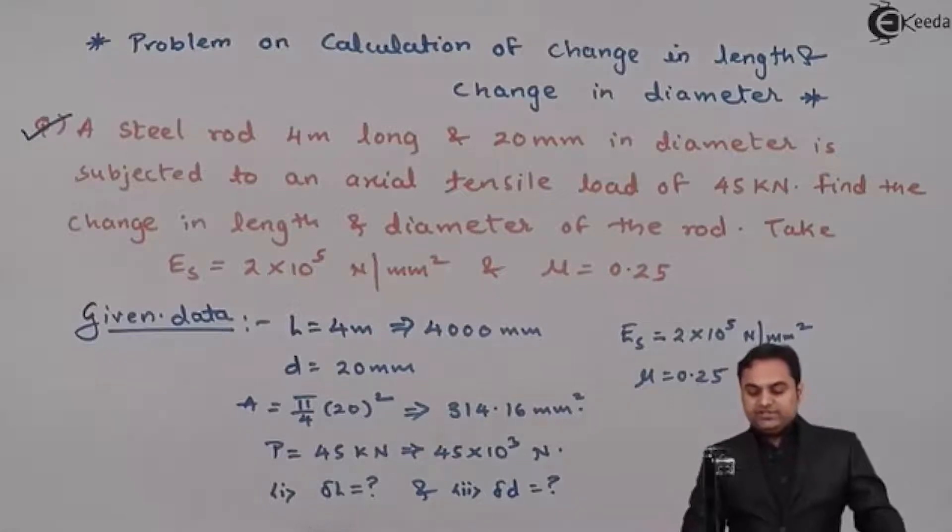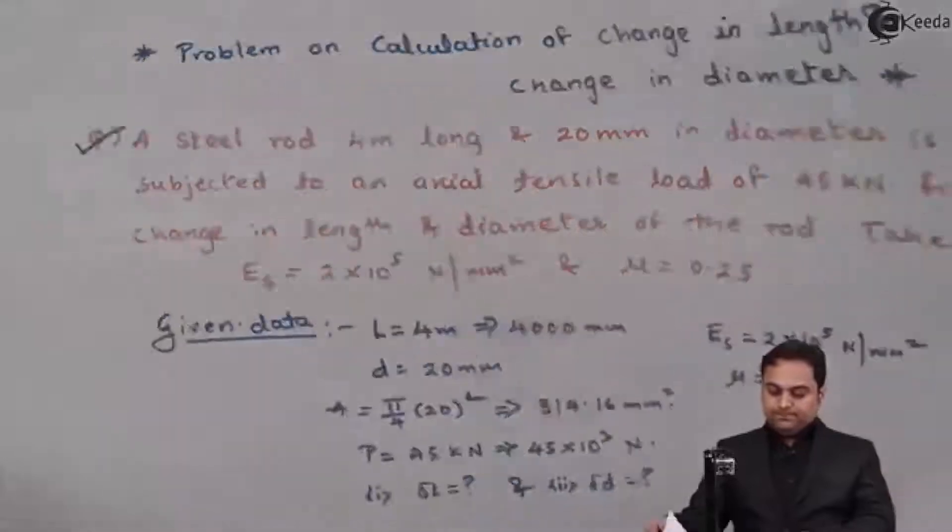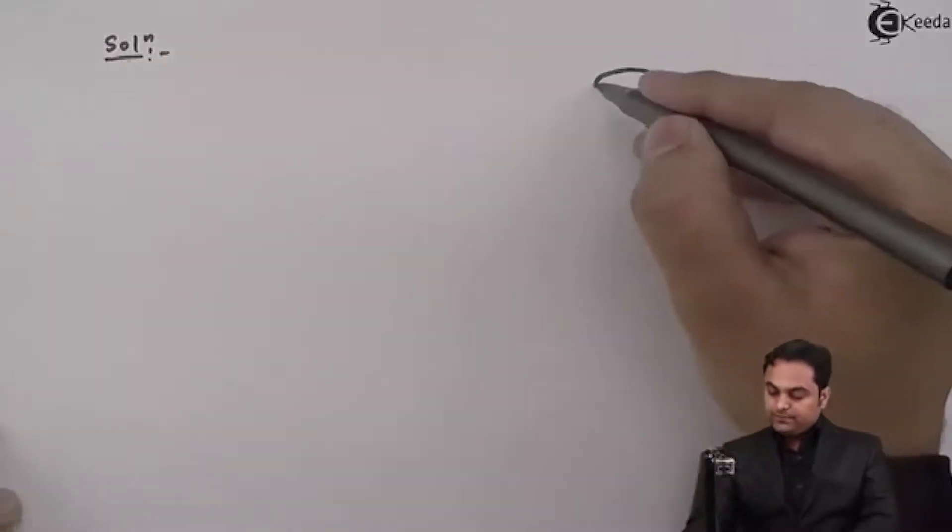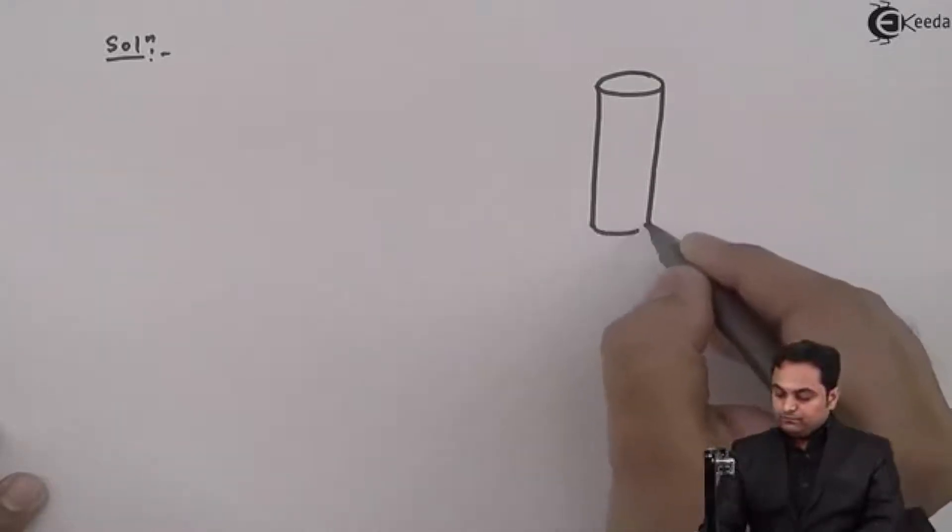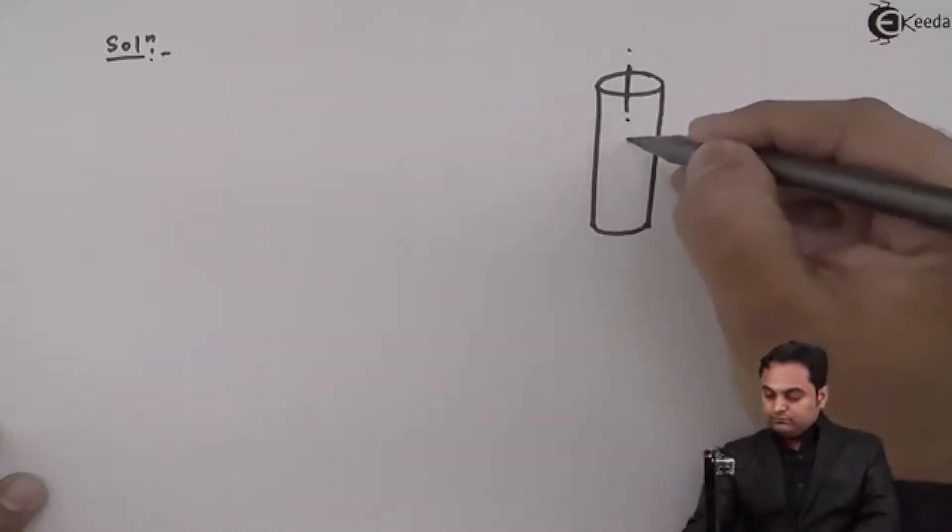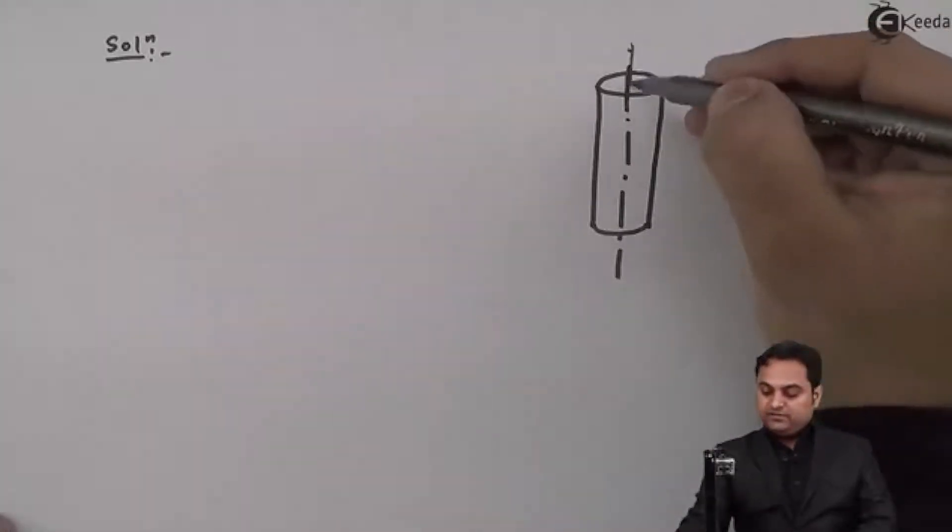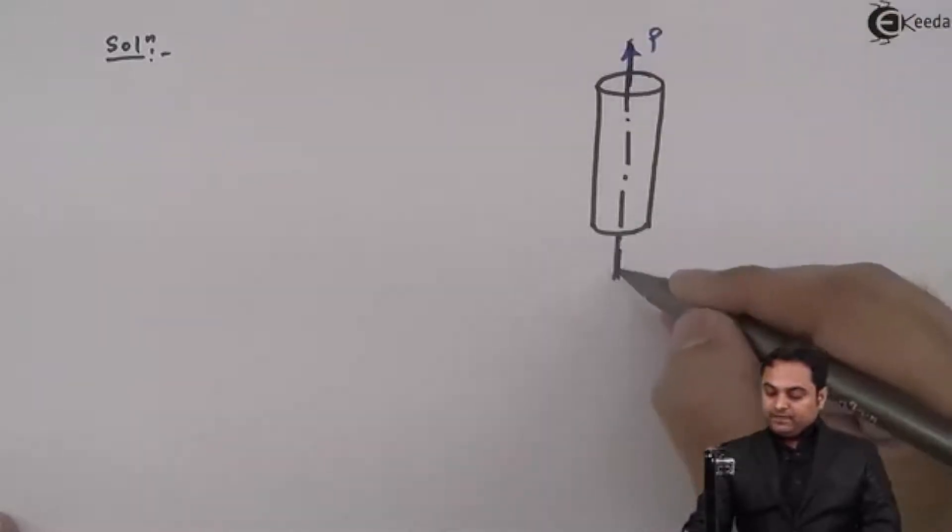As the first question is change in length, we are going to start the problem from here. And while explaining that I'll even draw a diagram of the steel rod which is given. Here is the steel rod which is subjected to an axial tensile load as given in the problem.